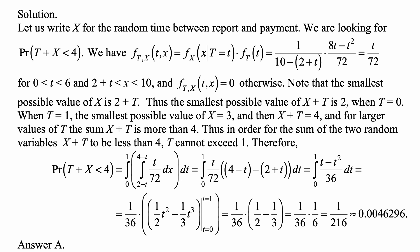So t/72 times (4-t) - (2+t). Well, 4 minus 2 is 2, and -t minus t is -2t, so this expression in parentheses is 2 - 2t.